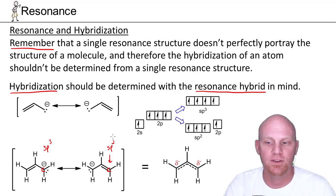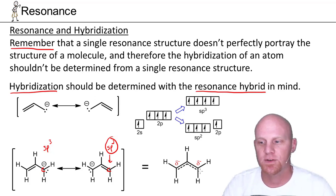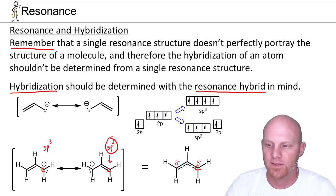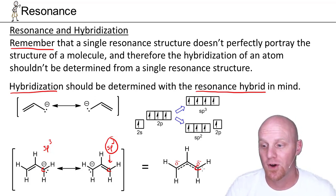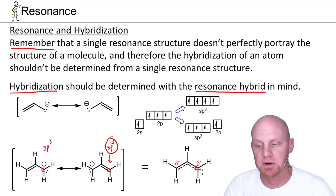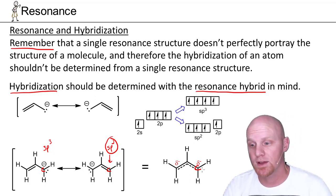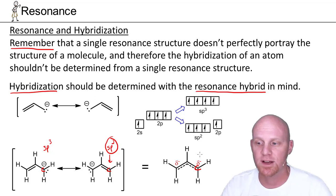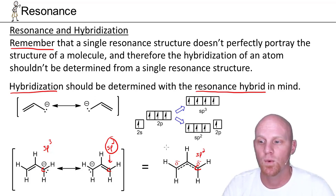The truth is, it's going to turn out to be sp2 hybridized. If we look at the resonance hybrid at this carbon, we can see that it has pretty much a steric number of three with this partial pi bond — the delocalized electrons — and that would make it sp2.